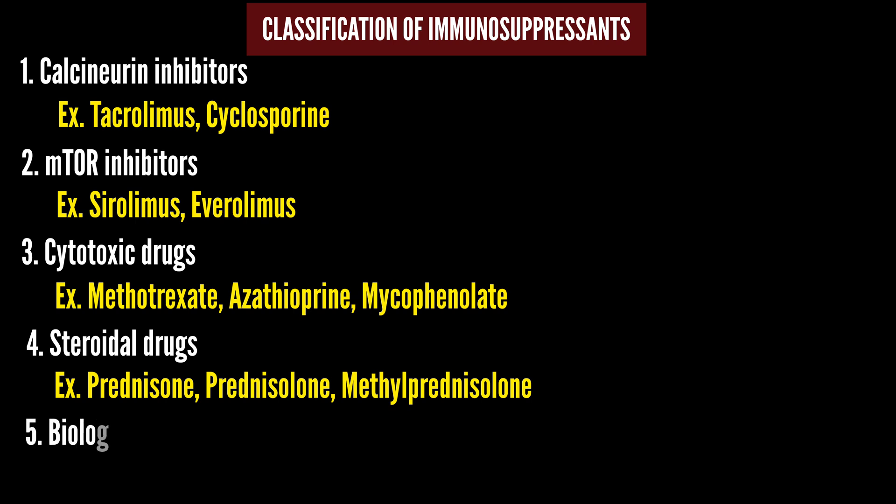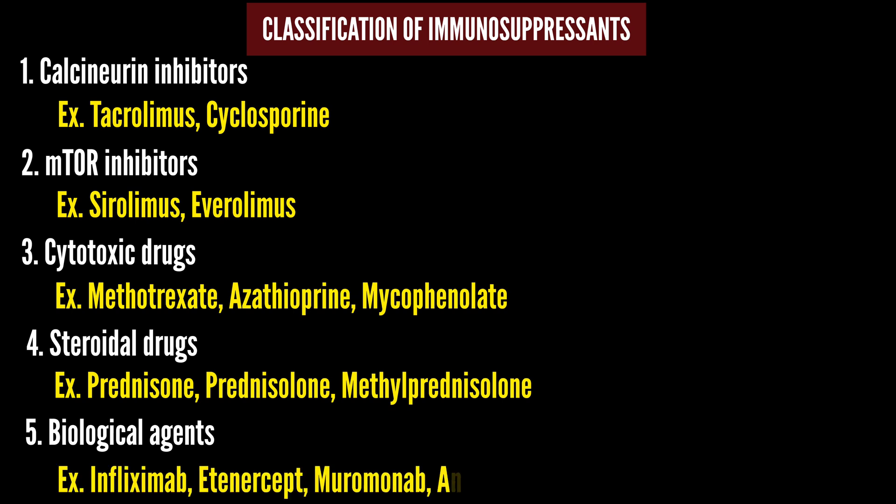The fifth category is Biological Agents. These are naturally derived substances — cytokines, interferons — that interact with immunity. Drugs in this group include monoclonal antibodies such as Infliximab (identified by its '-mab' suffix), as well as Etanercept, Muromonab, and Antithymocyte Globulin.